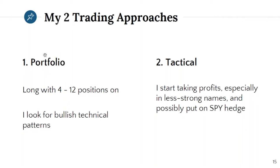I want to go over my different approaches depending on what type of market we're in. When I talk about the portfolio approach, that means markets are trending — we're above the 8 and 21 day moving averages — and I try to hold four to potentially twelve positions so the market can make me money while it's trending. I use a tier system to add share size depending on the chart patterns we're trading. When the market isn't giving those bullish setups, we are tactical — I'm not holding things for longer than an hour, sometimes a day and a half, looking for two-way trades.